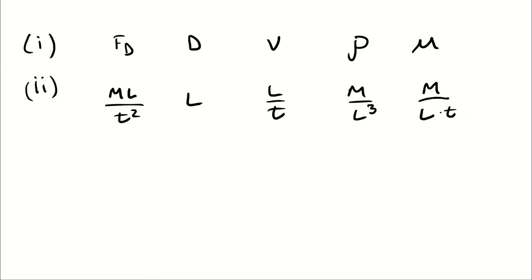If you don't know these off the top of your head, you can always work through them by thinking through an example unit. For example, if we measure force in Newtons, a Newton is a kilogram meter per second squared — that's mass times length per time squared.